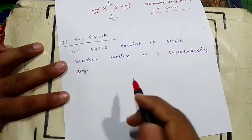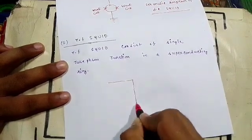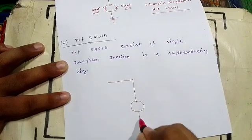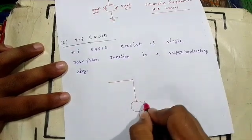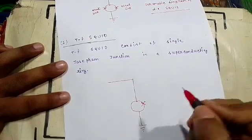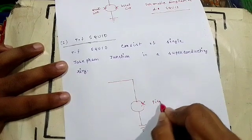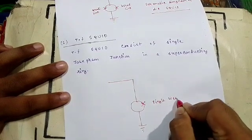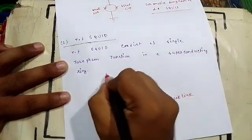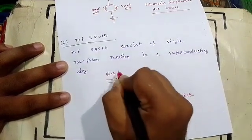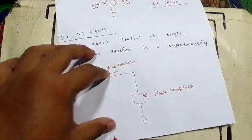Now I am showing the schematic diagram of RF SQUID. It is the same diagram but here a single weak link will be present. This will be the bias current. This is the schematic diagram of RF SQUID.